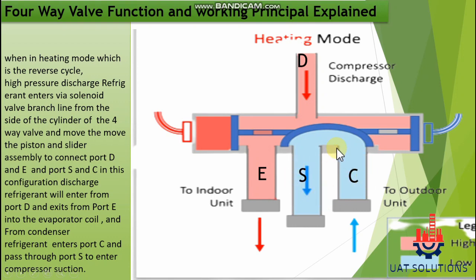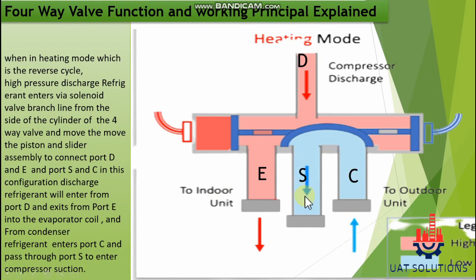In this configuration, discharge refrigerant will enter from port D and exit from port E into the evaporator coil, and from the condenser, refrigerant enters port C and passes through port S to enter the compressor suction.